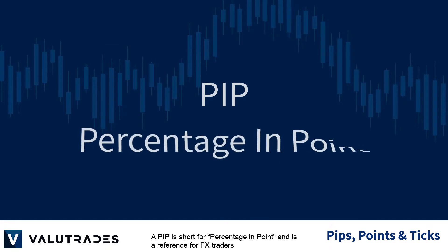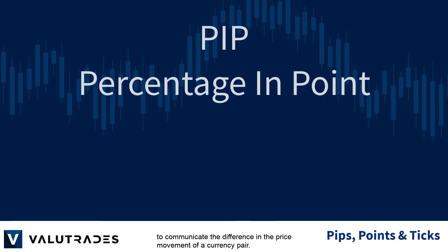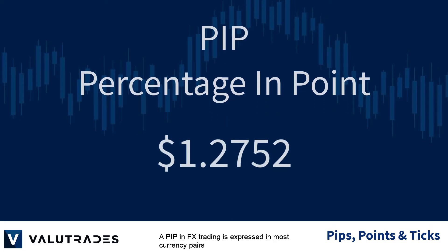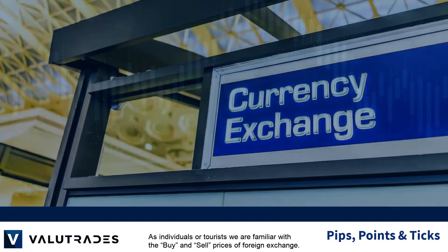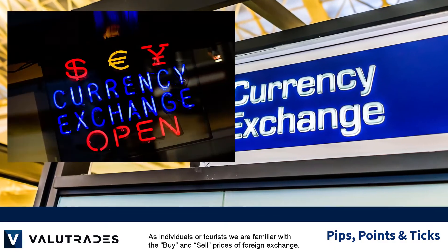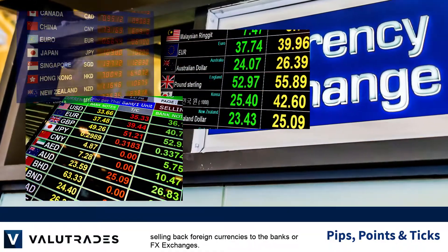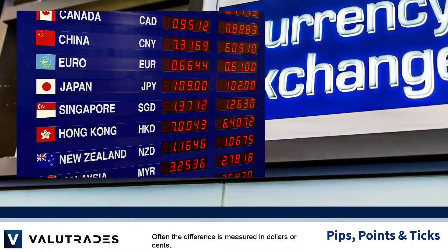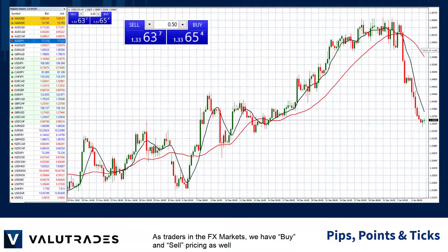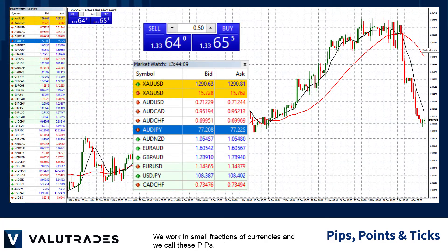A pip is short for percentage in point and is a reference for FX traders to communicate the difference in price movement of a currency pair. A pip in FX trading is expressed in most currency pairs as the fourth digit to the right of the decimal place in a currency pair's price. As traders in the FX market, we have buy and sell pricing as well, but the difference between the two is completely different. We work in small fractions of currencies and we call these pips.